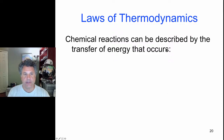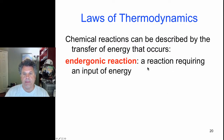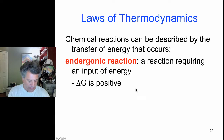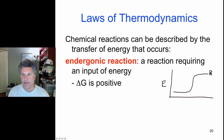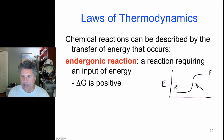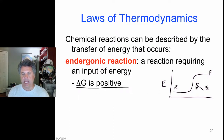An endergonic reaction is a reaction that requires an input of energy in order to proceed, and that is when delta G is positive. The products have greater energy than the reactants — there is a gain in energy — so energy must be put into the system to raise it to a higher energy state. When delta G is positive, the reaction is not spontaneous; it will not occur unless energy is supplied.